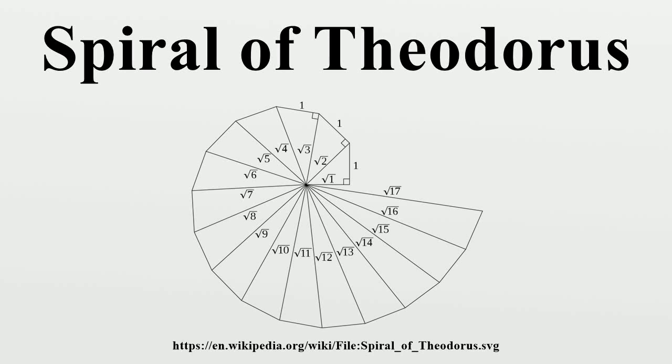In geometry, the spiral of Theodorus is a spiral composed of contiguous right triangles.